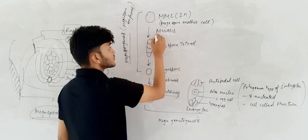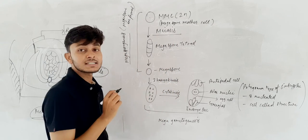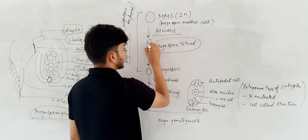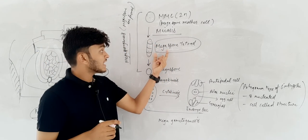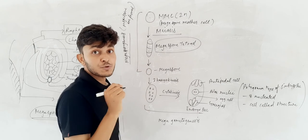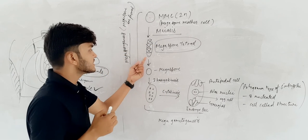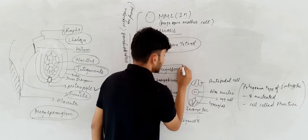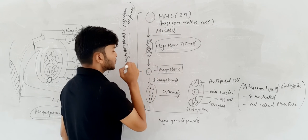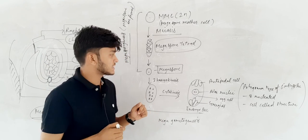Megaspore mother cells are diploid in nature. When gametes are to be formed, meiosis occurs. The megaspore mother cells undergo meiosis and convert into a megaspore tetrad. Out of the four cells in the tetrad, three are destroyed, and the remaining one functional cell is known as the megaspore.